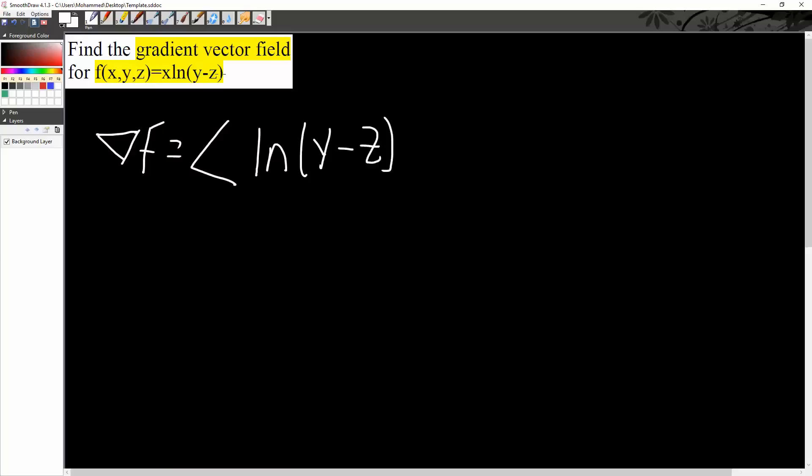This is because we're treating y and z as a constant. So we can say that we have x times ln 5. If we have x times ln 5, the derivative would simply be ln 5. But instead of 5, we write y minus z.